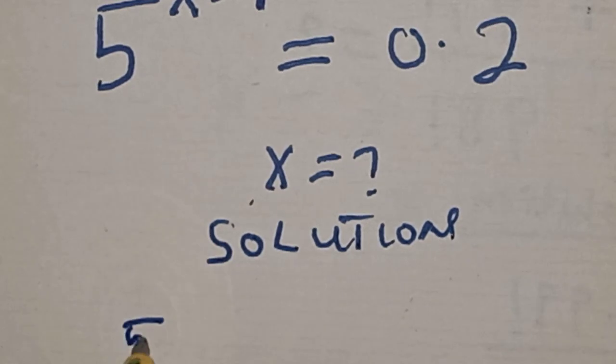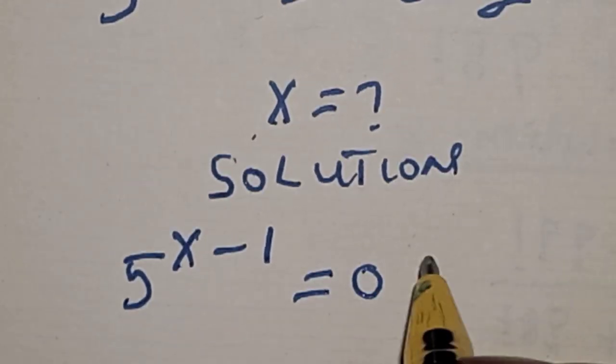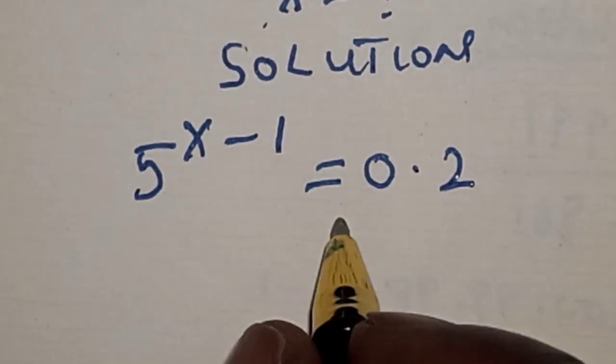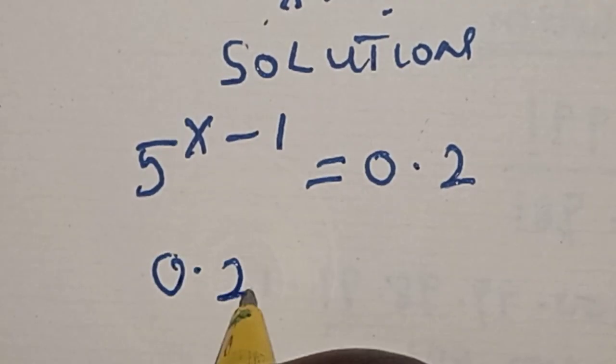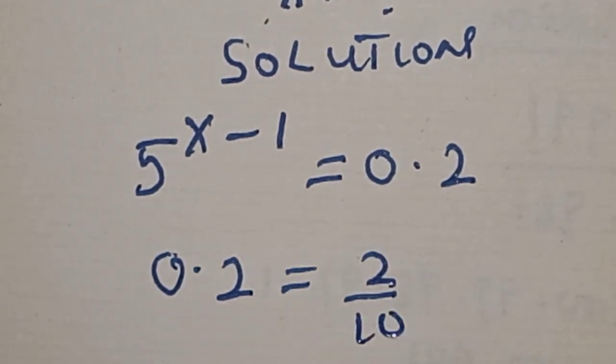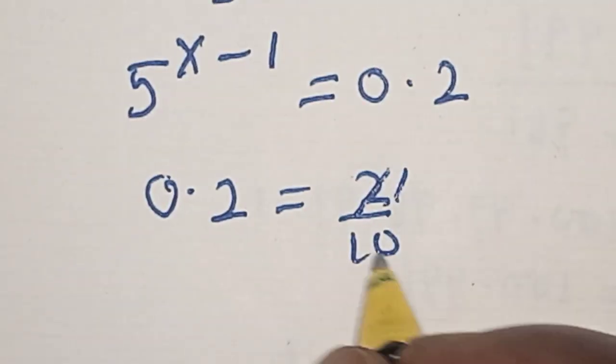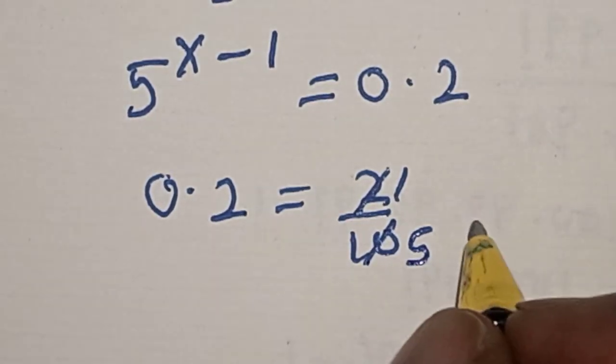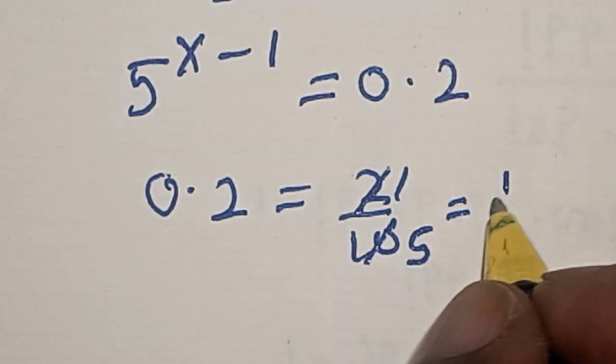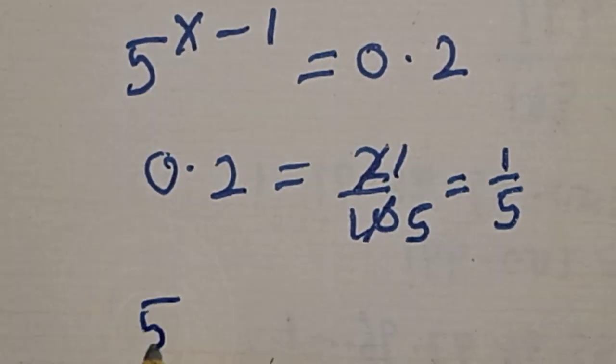Now, 5 raised to power x minus 1 is equal to 0.2. 0.2 is equal to 2 divided by 10, then 2 over 10 is 1 over 5. This is equal to 1 divided by 5.